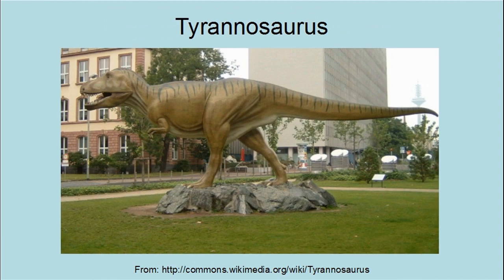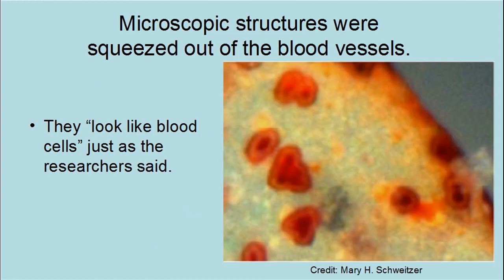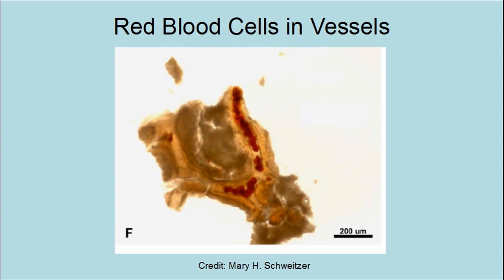Unfossilized soft tissue has been found inside a fossilized Tyrannosaurus rex bone. The soft tissue includes complete blood vessels and blood cells, and it is obvious that these are unfossilized even to the naked eye. This flexible branching structure was found inside the T. rex bone and has justifiably been identified as blood vessels. Blood vessels should not be there if the bone was really 65 million years old. These microscopic structures were squeezed out of the blood vessels and look like blood cells, as the researchers have said. How could these cells have lasted for 65 million years?